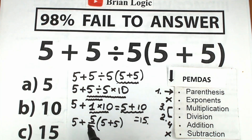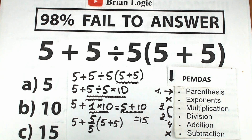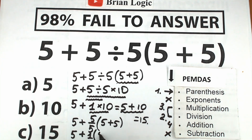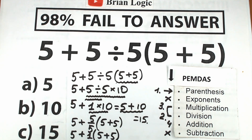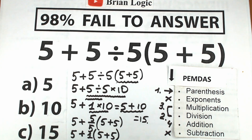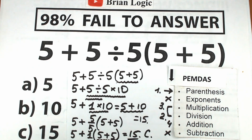Looking at it this way: 5 over 5 equals 1 — if we cancel those, this equals 1. So as a result, we have 5 plus 1, and inside the parentheses 5 plus 5 equals 10. So 10 times 1 equals 10, and we still get 15. We have the same answer: 15, which is option C.